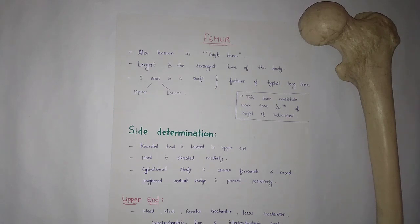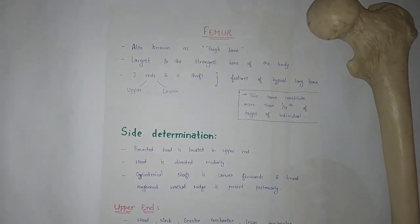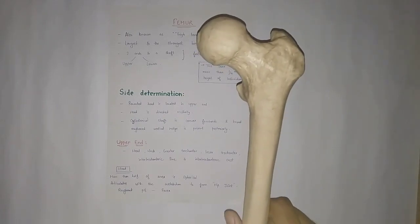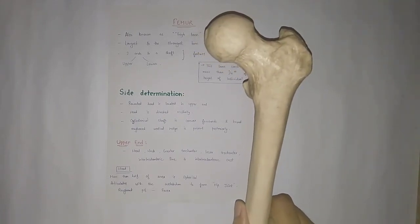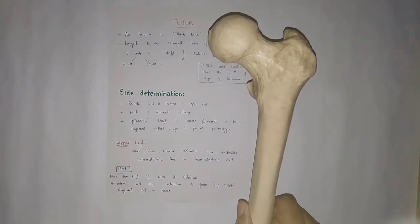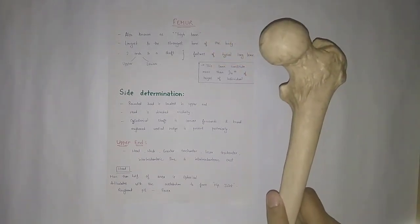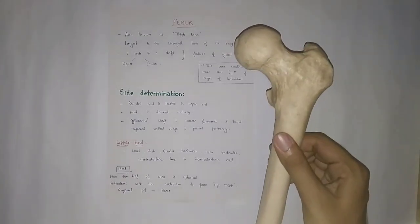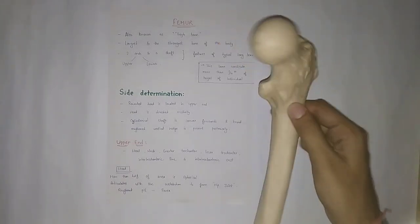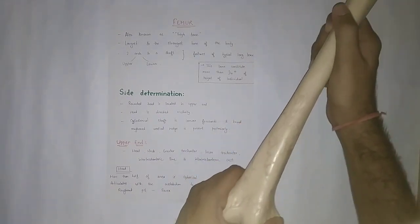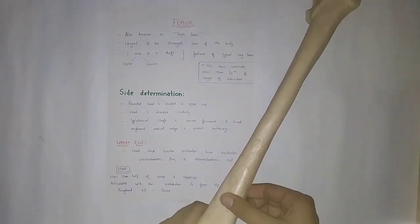Hello everyone and welcome back to our channel. Today we are going to discuss the femur bone. This is the femur, or as we also call it the thigh bone. Like other typical long bones, the femur also has two ends and a shaft — the upper end, lower end, and this one is the shaft.